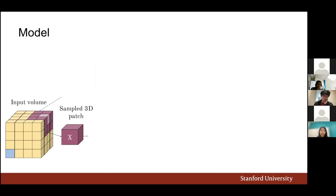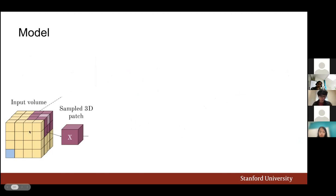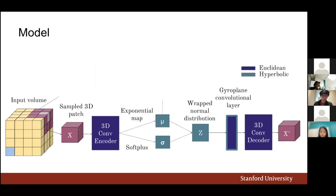The method samples a large volume V (the anchor), a smaller sub-volume S (the positive child), and a non-overlapping volume T (the negative), then feeds them through a convolutional VAE whose encoder and decoder use convolutions. The representations are in hyperbolic space — methods have been developed to sample and use the reparameterization trick for training variational autoencoders in hyperbolic space.